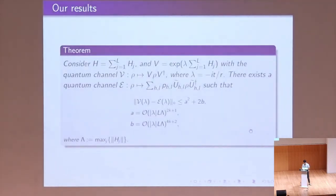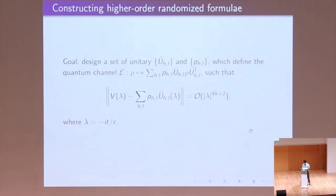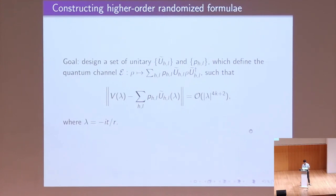The answer is yes, we can do that. What we do is design a set of probabilities P and unitaries U. Here I use the notation: U-tilde is the unitary we design, and p_{H,L} is the corresponding probability. We design this kind of unitary such that its distance from V can be at the order of 4K+2.